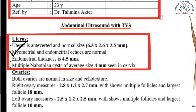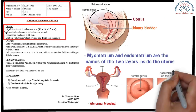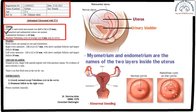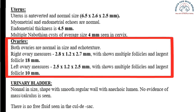After that, it is written that multiple Nabothian cysts of average size 4 mm are seen in the cervix. The mouth of the uterus is called the cervix, and this report states that there are multiple cysts at the mouth of the uterus. The next section mentions the ovaries — both ovaries are normal in size and echotexture, indicating that both ovaries are normal.